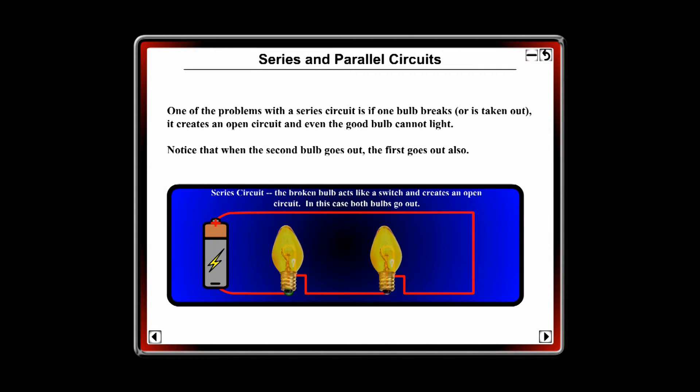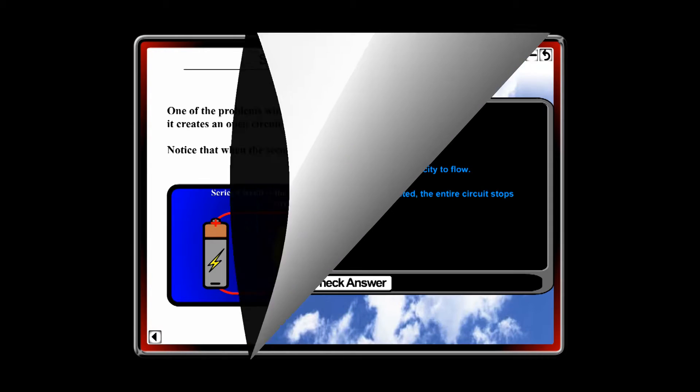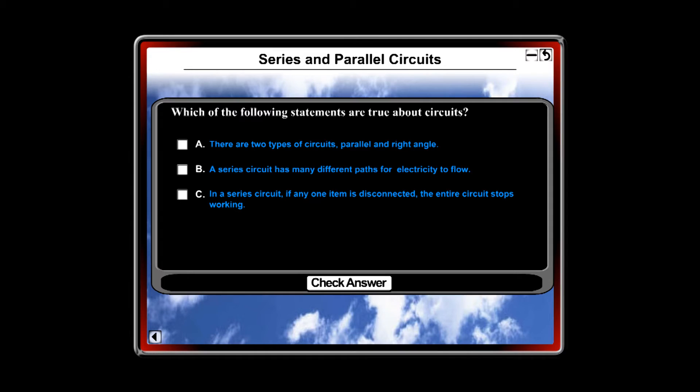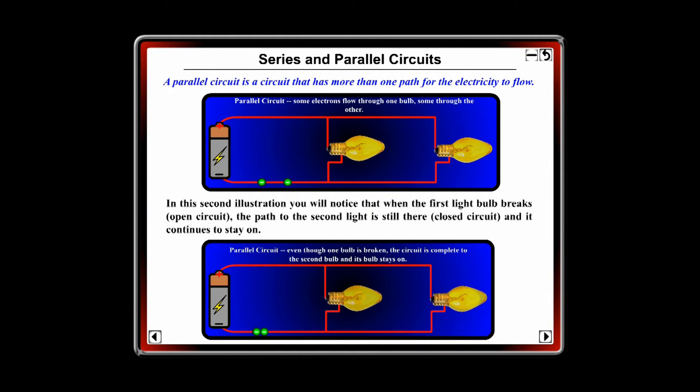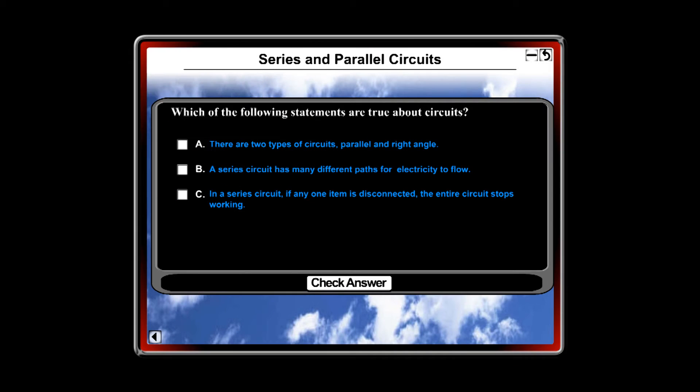The next page shows how, in a series circuit, if one bulb goes out, the entire circuit goes out. Students answer multiple choice questions as they go through each lesson. Next, the student learns about parallel circuits and how even if one bulb goes out, the other can stay on because there is a second path for the electricity. Again, they would answer a question.